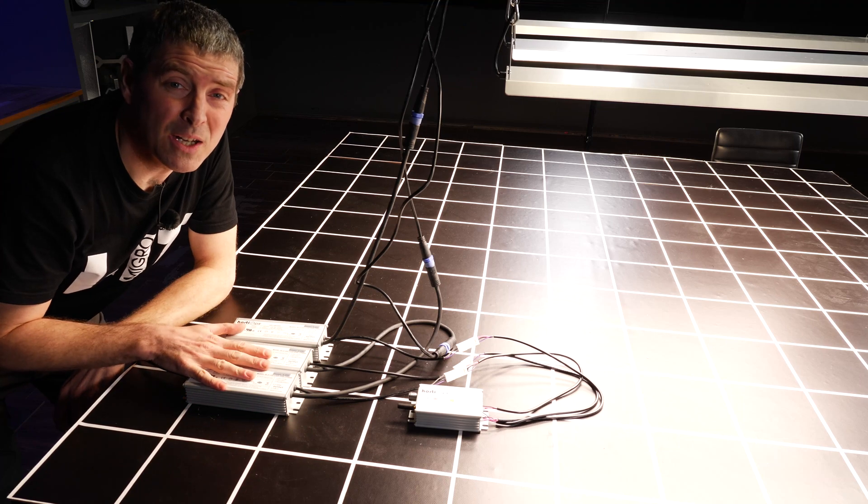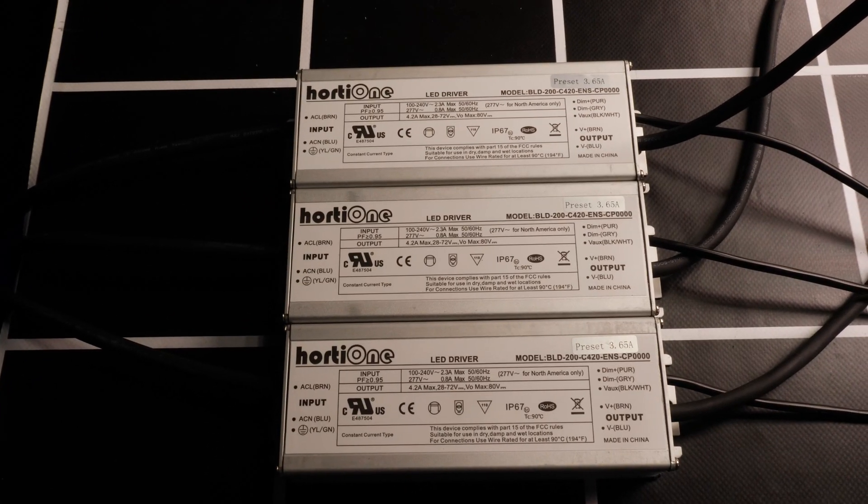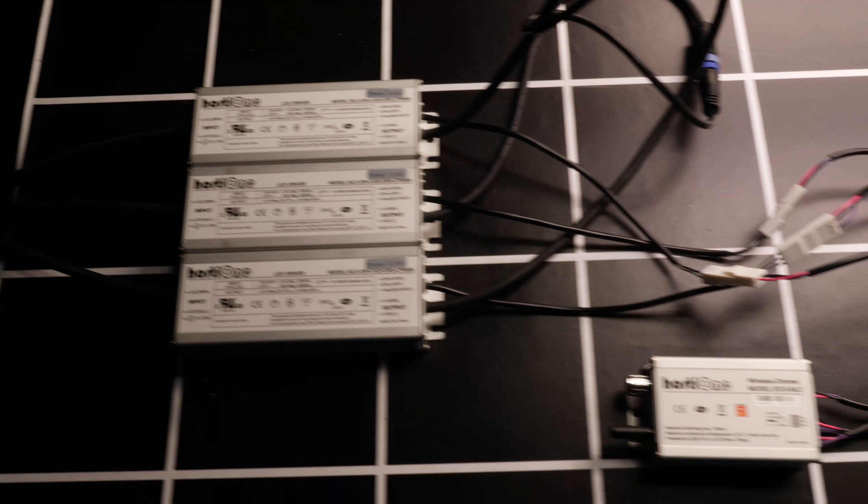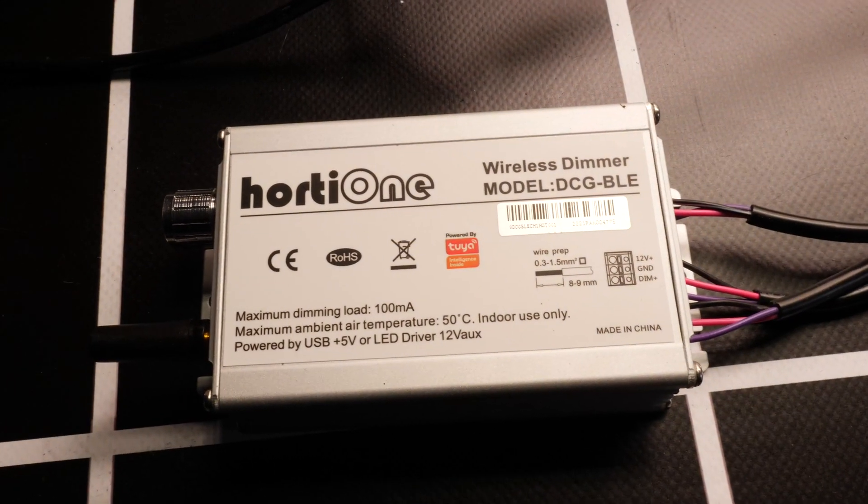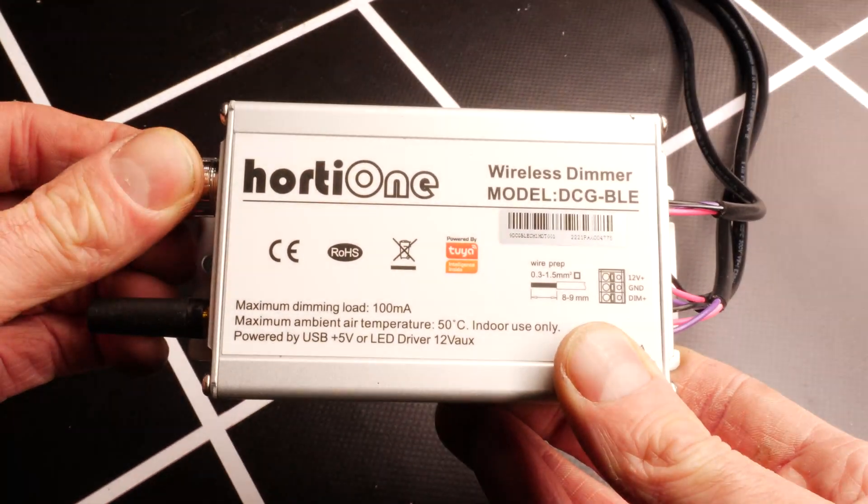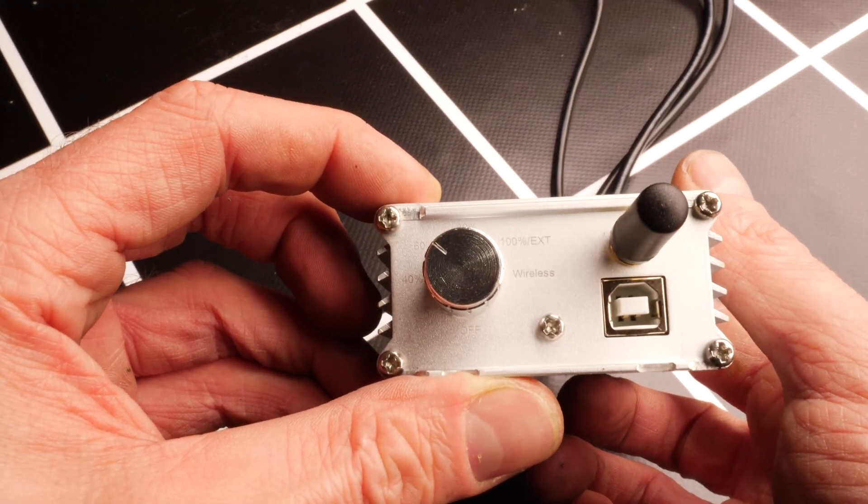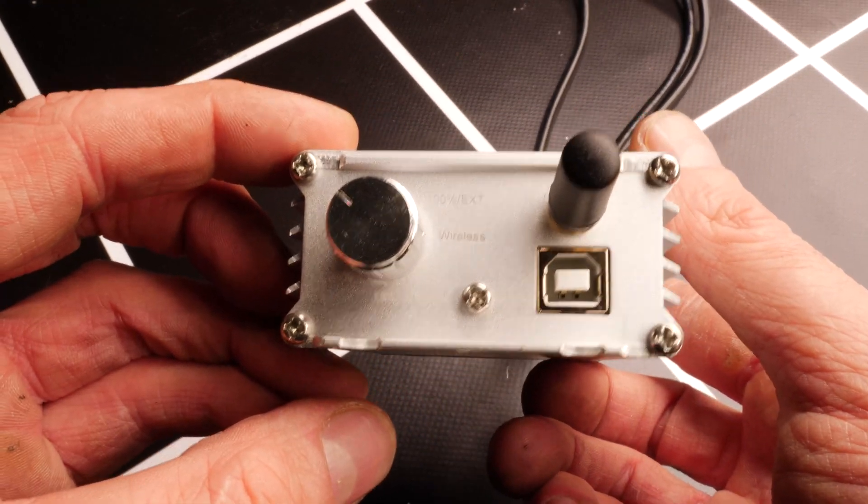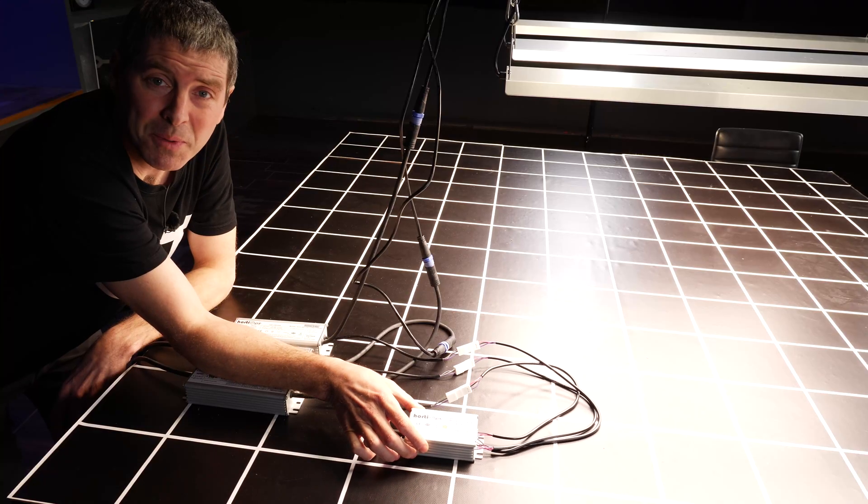Each LED board has its own driver here, and these are Horty One badged drivers that plug in separately and then have their own dimming control cables which you can connect together and control the three lights simultaneously with this Horty One dimmer unit, which has mechanical dimming for dimming up and down on board and also Bluetooth facility for dimming them remotely.